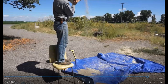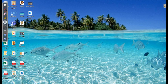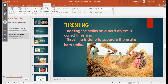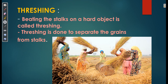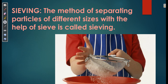Now I am going to move to another method — sieving. Sieving is a method used to separate particles of different sizes with the help of a sieve. You all must have seen at your home that in the kitchen, your mother uses a sieve to separate wheat flour from unwanted materials present in it. For performing this method of separation, the impurities and the wheat flour should have different sizes.